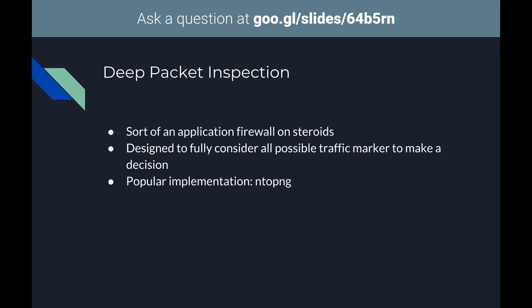Deep packet inspection is kind of an application firewall on steroids — you're really looking at all parts of the packet and can build rules based on all parts of the traffic. It's not super common; some places do it, China does it. If you're looking to get started, ntopng is an open-source solution you can play with, and it has decent guides — probably the most complex out of everything previously talked about.